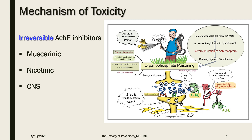Within 48 hours after phosphorylation, the phosphorylated enzyme complex loses its alkyl group in a process called aging and thus cannot regenerate. Accumulation of acetylcholine at the post-ganglionic parasympathetic junctions activates muscarinic receptors, leading to autonomic parasympathetic manifestations. Accumulation at nicotinic receptors leads to musculoskeletal manifestations, and at central nervous system synapses it causes overstimulation followed by depression.